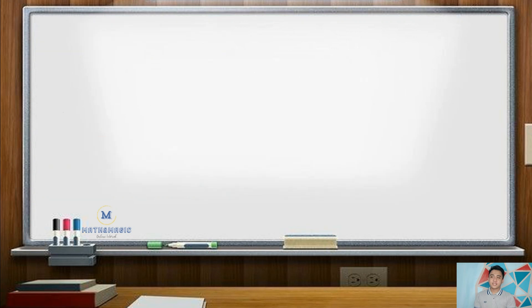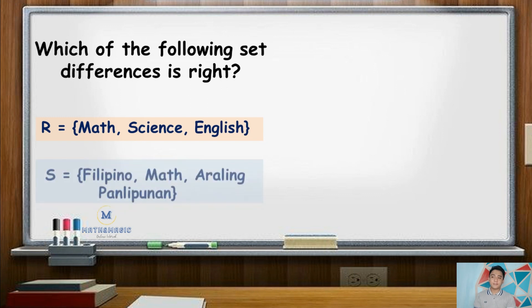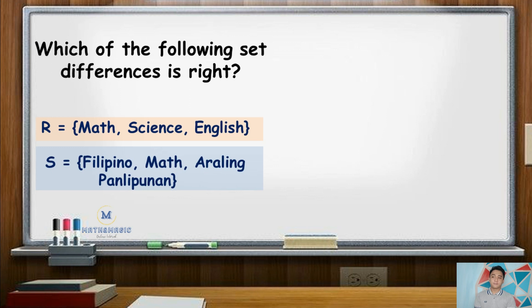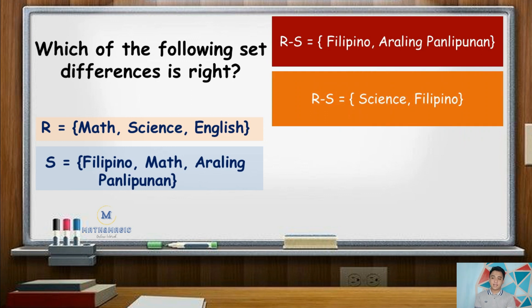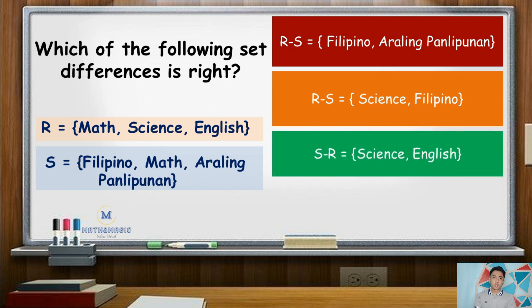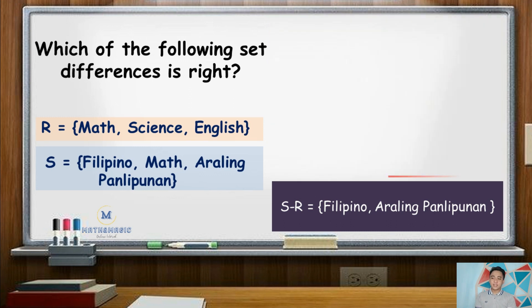Now try to answer this. Determine which of the following set differences is correct. Given that set R contains Math, Science, and English, while set S contains Filipino, Math, and Araling Panlipunan. The correct answer is letter D: S minus R has the elements Filipino and Araling Panlipunan, since those are elements in set S that are not found in set R.